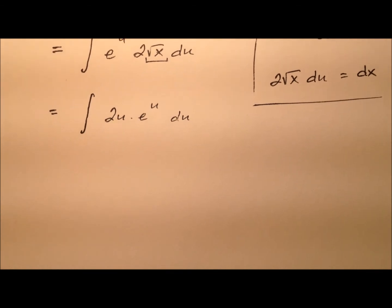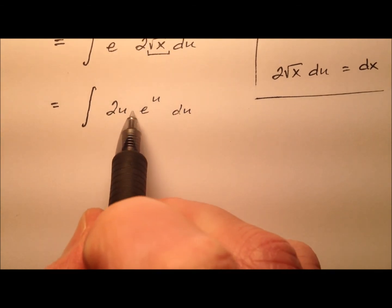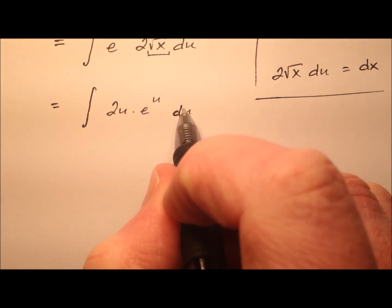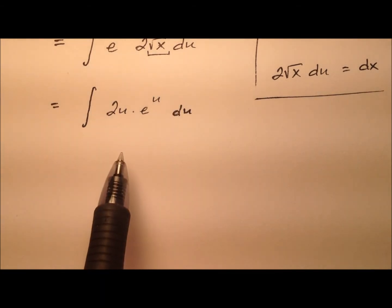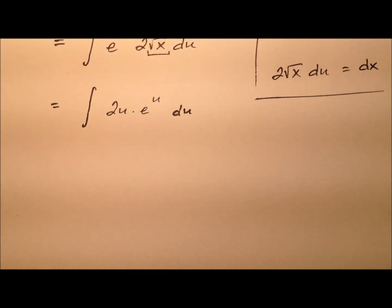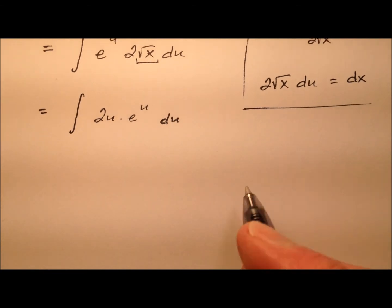Okay, now this isn't so bad at all. Well, it looks like probably we're going to need to use integration by parts on this rascal. And normally we would use u and v for variables, but we already have u being used. So let's go ahead and use a and b instead.